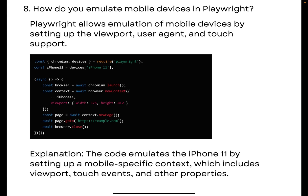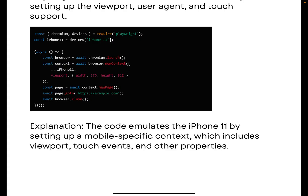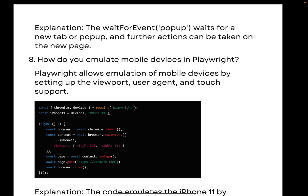The next question is: how do you emulate mobile devices in Playwright? Playwright supports emulation, so you can perform mobile testing — not on actual devices, but simulating mobile screen sizes for Android and Safari. Playwright allows emulation by setting up viewport, user agent, and touch support. For example, you can set up a mobile-specific context for iPhone 11, 13, or 15, and the launched browser will behave like a mobile screen.